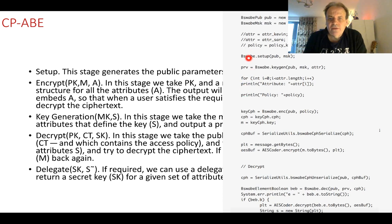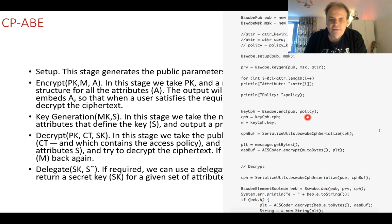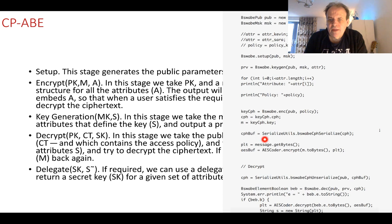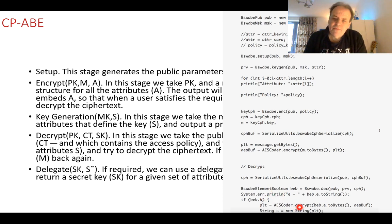In this example, we do our initial setup with a new public key, then generate our private key from keygen. We go ahead and encrypt to find the key we're going to use — that produces the ciphertext and the key. The message has the cipher policy embedded. We then use our generated key to encrypt with AES, and when we have our attributes we should be able to decrypt back with AES.